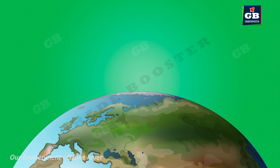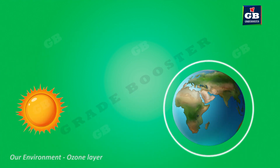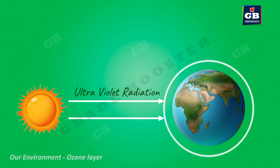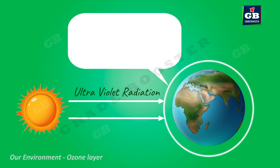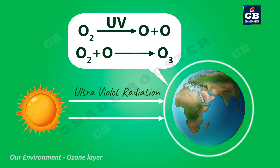Ozone is found at the higher levels of the atmosphere, around 15 to 40 kilometers height from the Earth. This ozone protects the Earth from the harmful radiations of the Sun. When ultraviolet radiation from sunlight hits oxygen in the atmosphere, oxygen molecules split into oxygen atoms. These free oxygen atoms then combine with oxygen molecules to form ozone molecules — this is how ozone is formed.